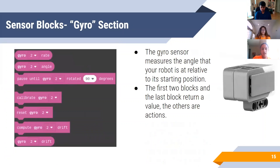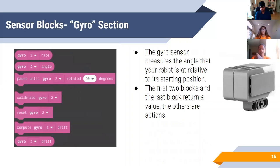Finally we have the gyro sensor. The gyro sensor measures the angle your robot is at relative to its starting position. For example, if your robot starts facing forward but somewhere in the program it ends up facing sideways, the gyro sensor will register a 90-degree turn relative to its starting point. The gyro sensor is really helpful for staying in a straight line or making sure your robot is always facing the correct direction.